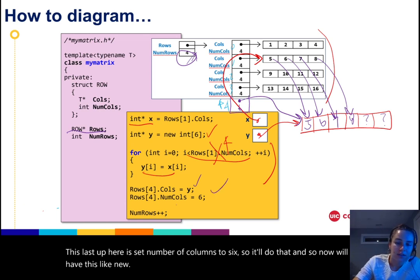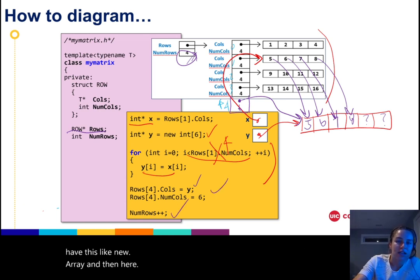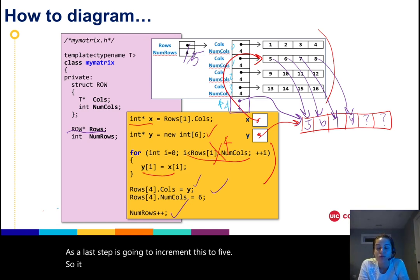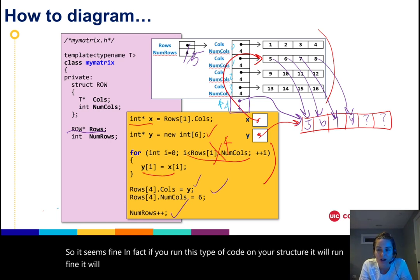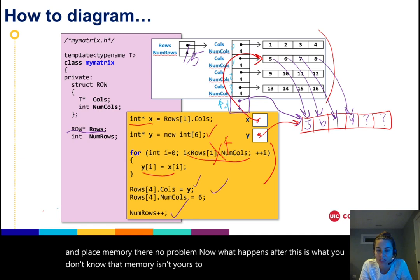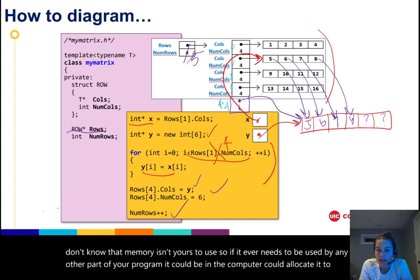So it seems fine, and in fact if you run this type of code on your structure, it will run fine. It may run fine on lots of operating systems, so it will go ahead and place memory there, no problem. Now what happens after this is what you don't know. That memory isn't yours to use, so if it ever needs to be used by any other part of your program, it could be, and the computer could allocate it to you and it could overwrite what we just did.